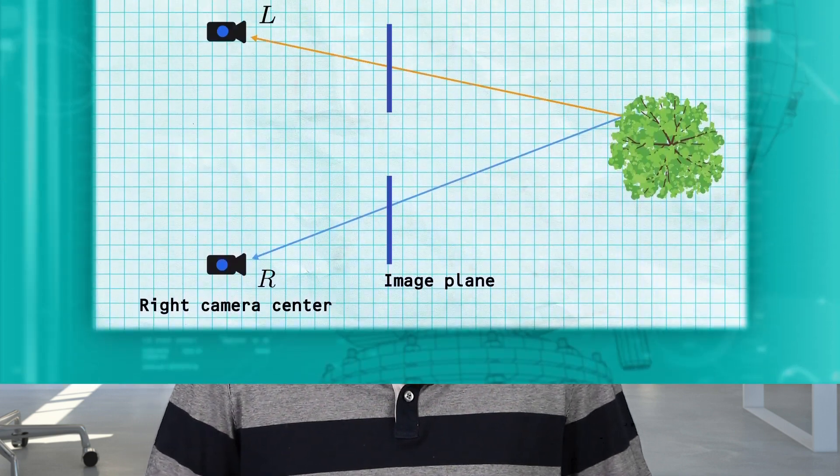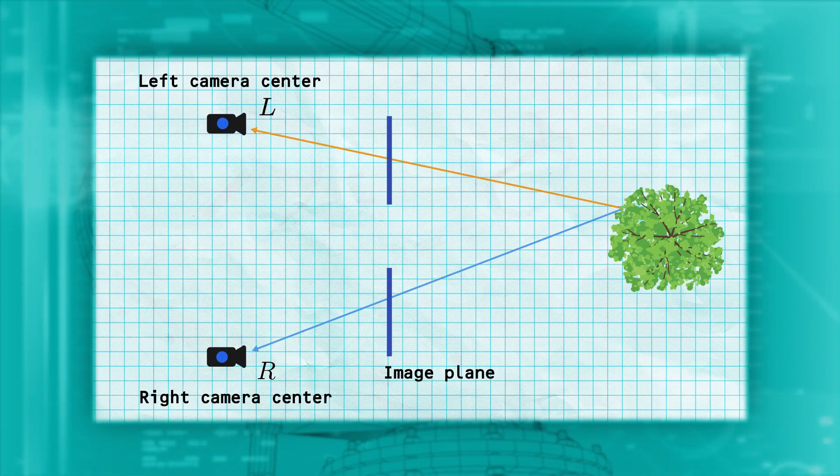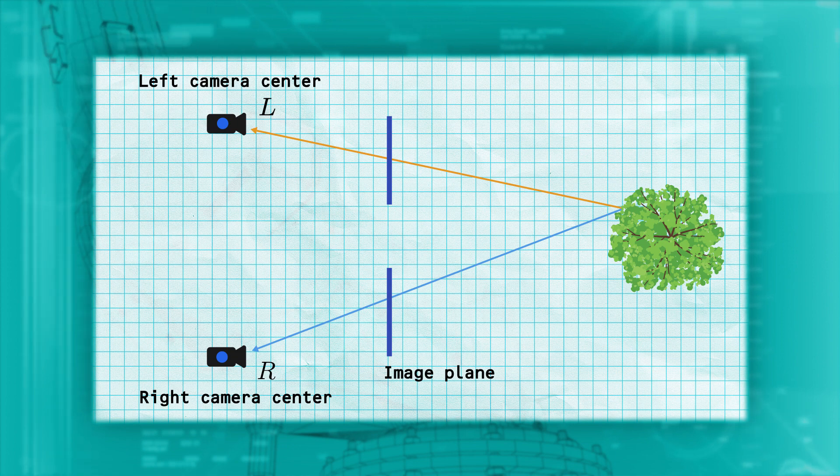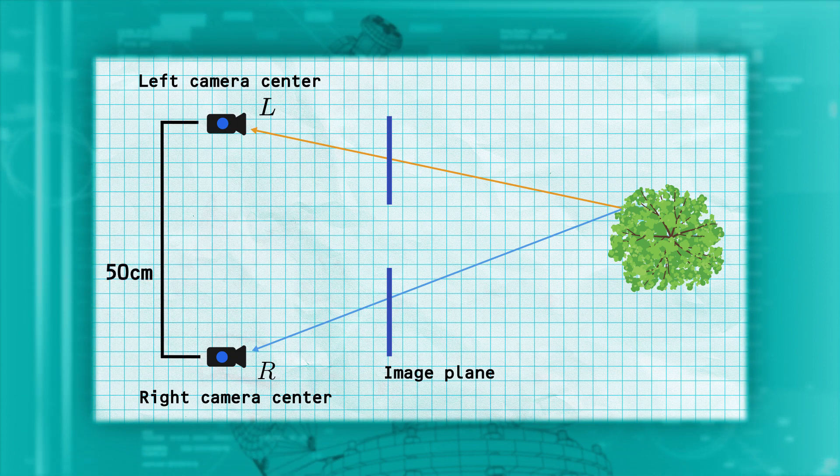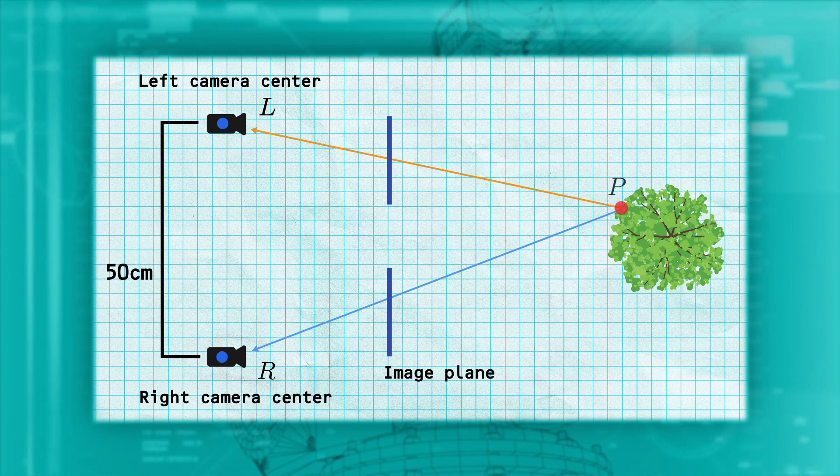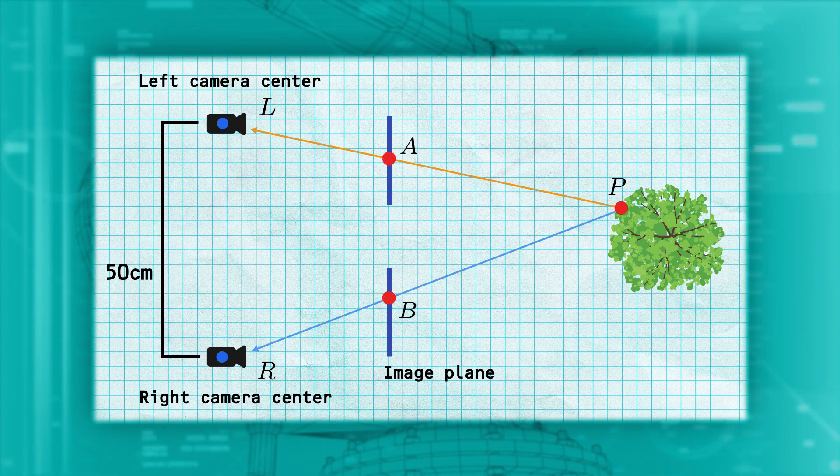Let's start by looking at our setup from overhead. We have our tree in front of the robot and two cameras on the robot mounted 50 centimeters apart. If there is a feature on the tree at a point P, then it will appear on the image plane on the left camera at point A and at point B for the right camera.